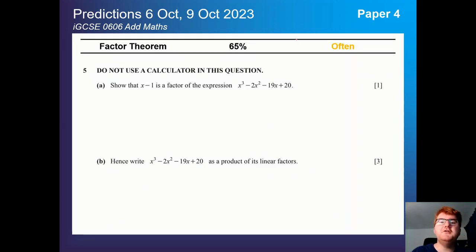On to paper two, I should say paper two here at the top. The first thing I want to mention here, which I didn't mention in paper one, is the factor theorem at 65% coming up quite often. It usually involves factorizing some kind of cubic. This is a very typical question you see in front of you.